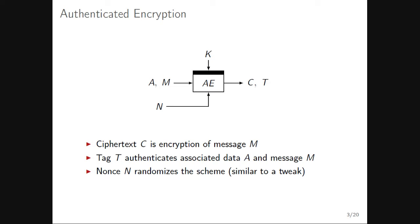Another important concept is authenticated encryption. It takes an associated data block, a message, a secret key, and a nonce as input, and produces a ciphertext and a tag. The ciphertext is the encryption of the message, and the tag protects the authenticity and integrity of the associated data, message, and nonce. The nonce has similar functionality to a tweak in a block cipher — it randomizes the scheme.